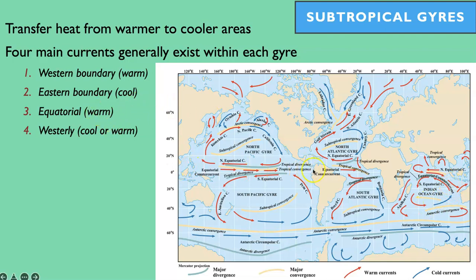The equatorial currents of each gyre tend to be warm. The westerly currents are those that move from west to east and bring material from the western boundary to the eastern boundary — in some cases they're cold, in some cases they're warm. In the North Pacific, we have a warm to cold transition, same with the Gulf Stream. Down in the Southern Hemisphere, we have some cold westerly currents. There are other currents at higher latitudes than these five gyres, but we're not going to talk about those details right now.